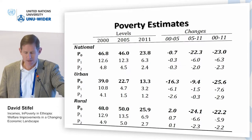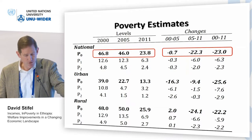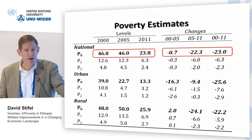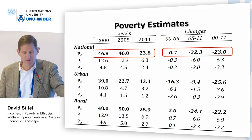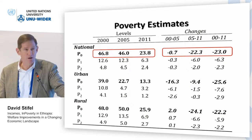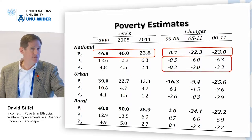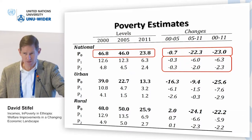Our initial poverty estimates for the year 2000 were roughly 47 percent of Ethiopians poor, and that fell considerably by 2011 — by some 23 percentage points — with most of this occurring between 2005 and 2011. We also see that the depth and severity of poverty show similar patterns: little change between 2000 and 2005, but then a big decrease between 2005 and 2011.